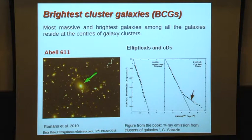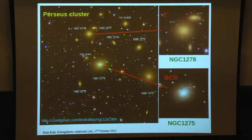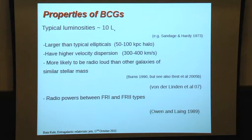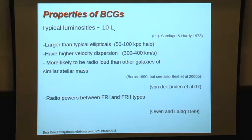Their surface brightness profile in elliptical cases looks like a standard profile, whereas if it is a CD, it has an extended stellar envelope. These are the BCGs — this is the famous Perseus cluster. An elliptical galaxy in the same cluster versus the massive brightest cluster galaxy at the center really looks special in optical. They are typically 10 L-star galaxies, at the very highest end of the luminosity function, and are typically more radio loud than any other galaxies outside or within clusters.